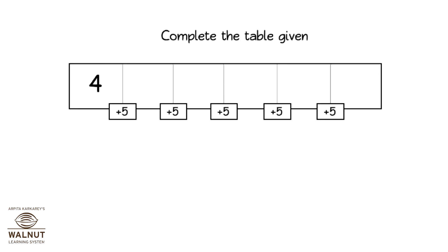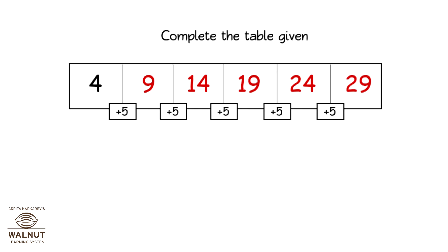Complete the table given. Starting at four, skip count by five. You get nine, fourteen, nineteen, twenty-four, and twenty-nine.